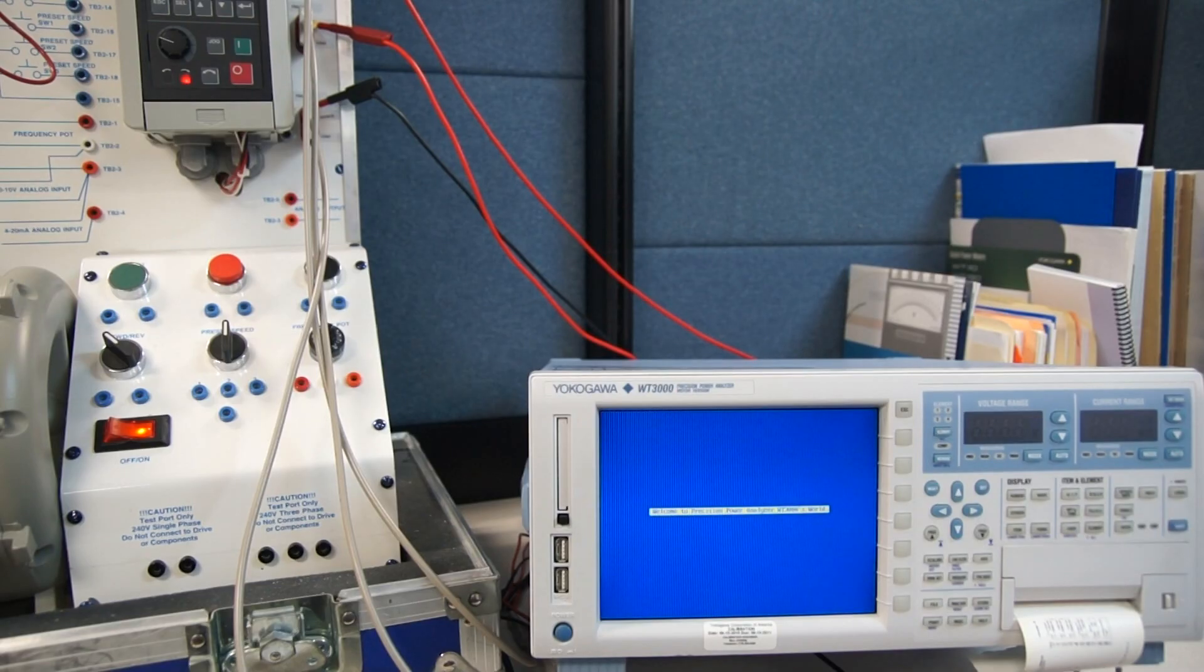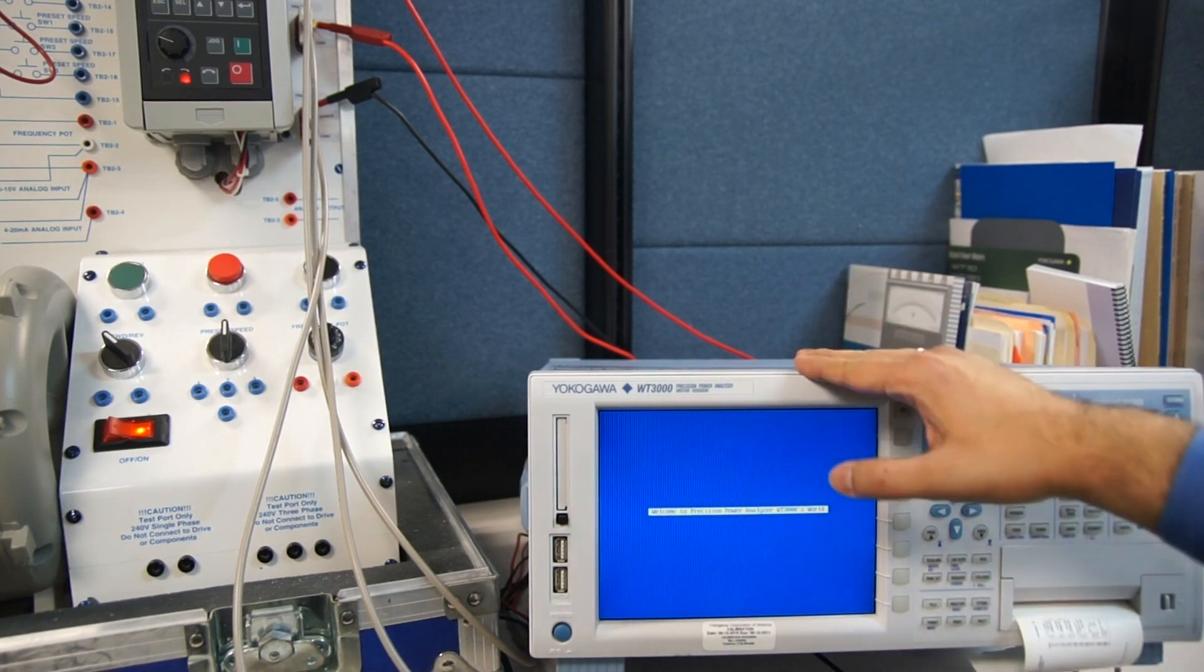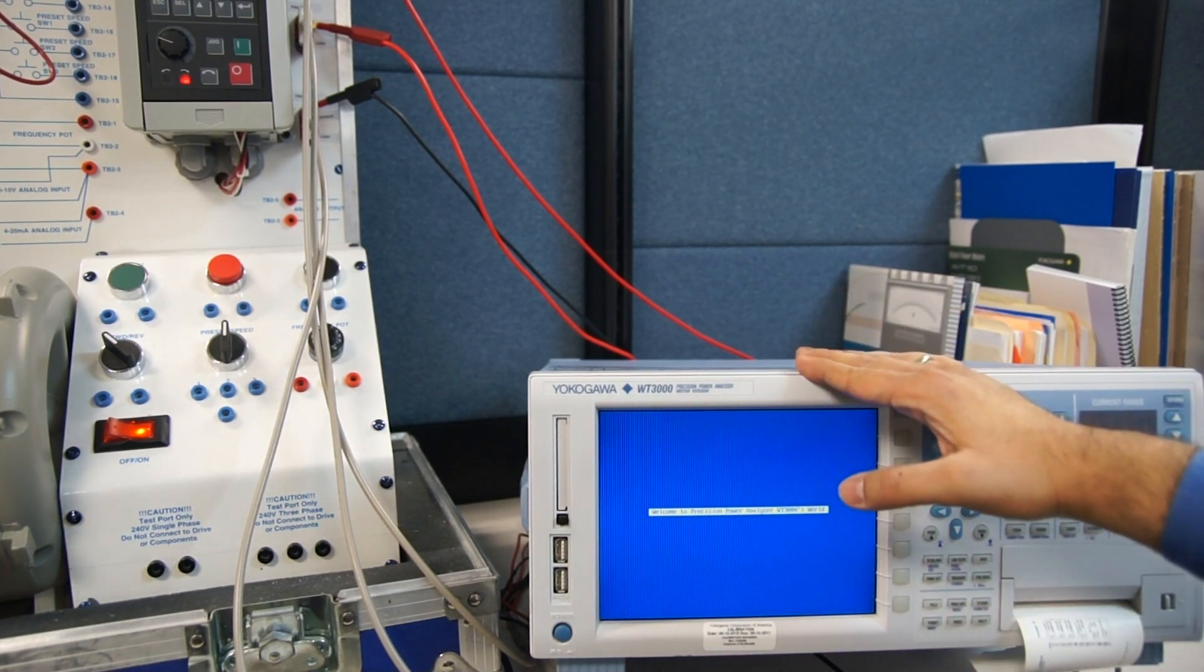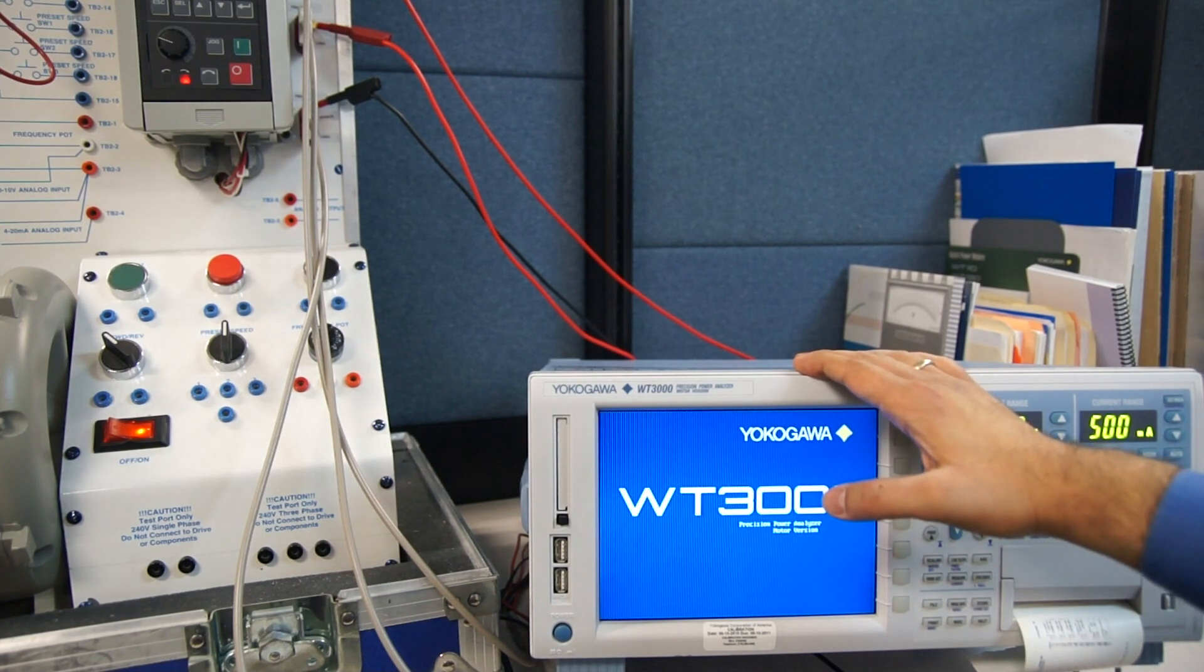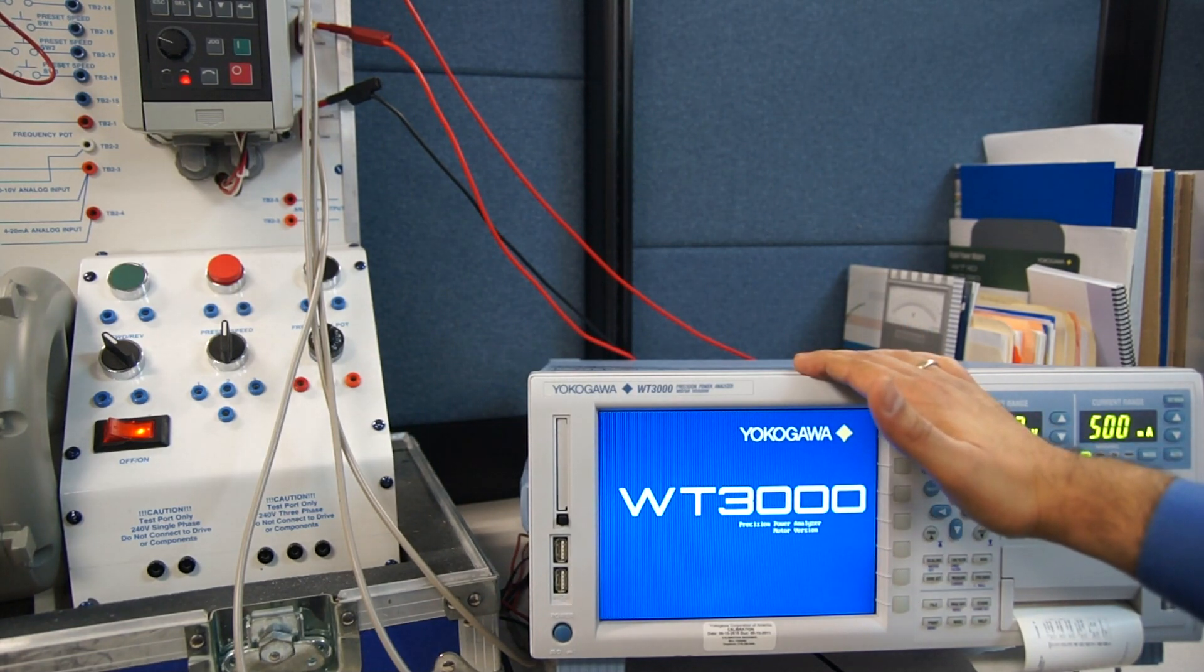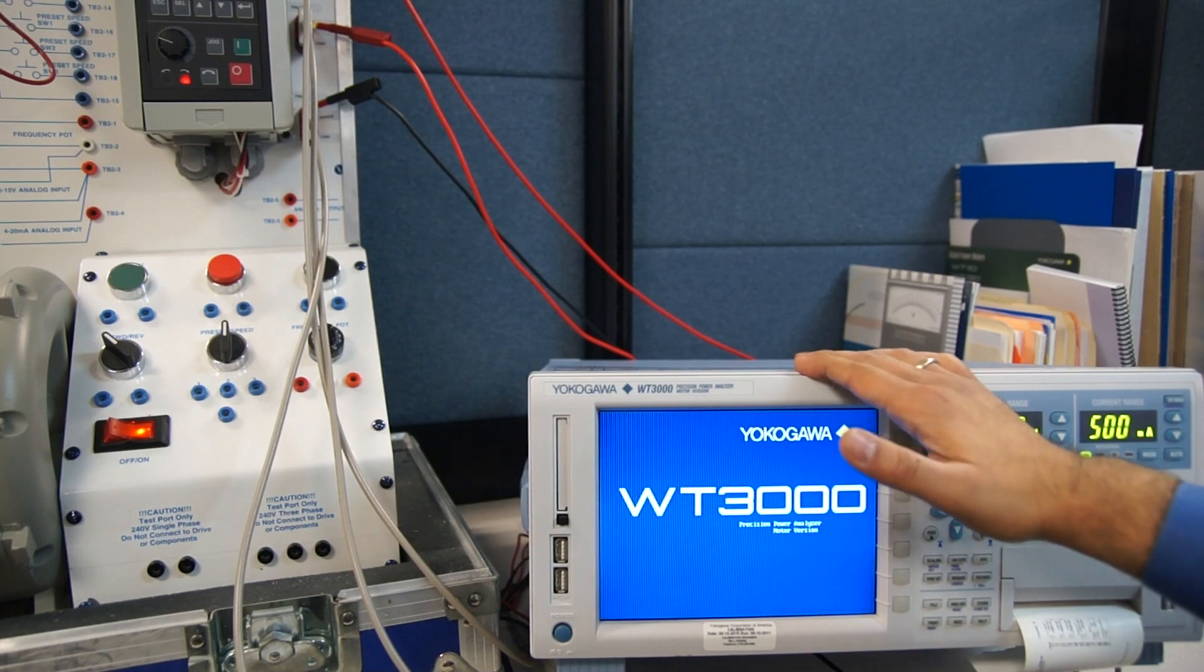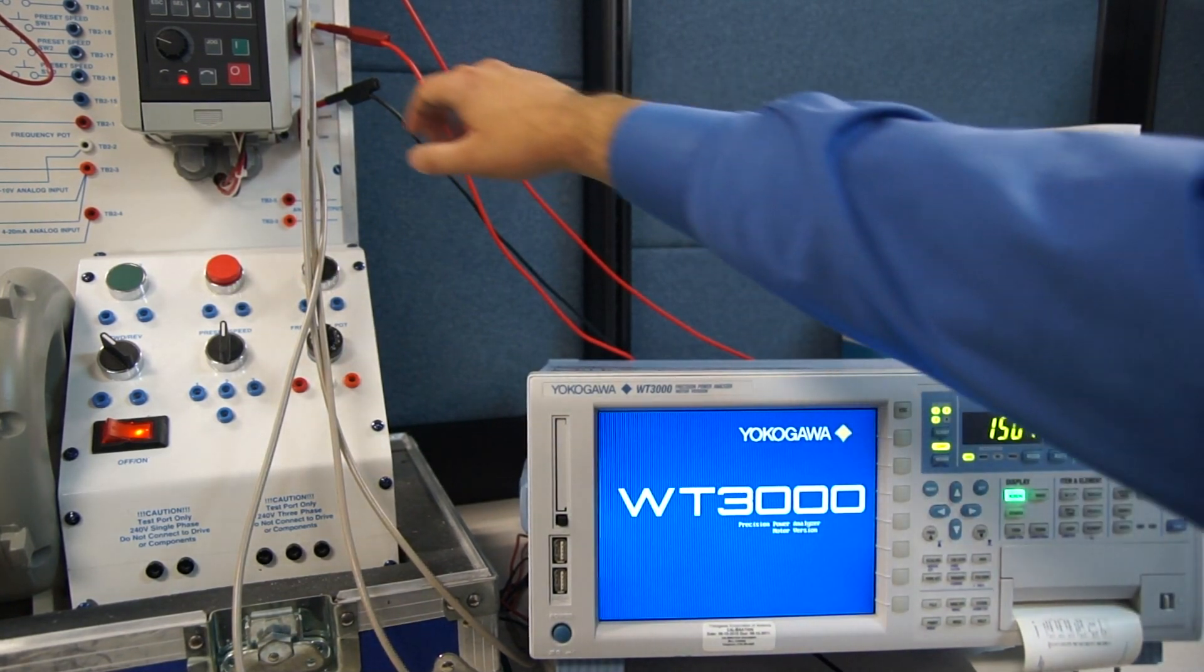So now that we have connected our three-phase three-wire circuit to a power analyzer, let's go ahead and turn the power analyzer on and verify if all our voltages, currents, and power are reading correctly. Also, we will verify if all the power is positive, which tells us that our wiring is correct. So let's go ahead and turn the motor on.